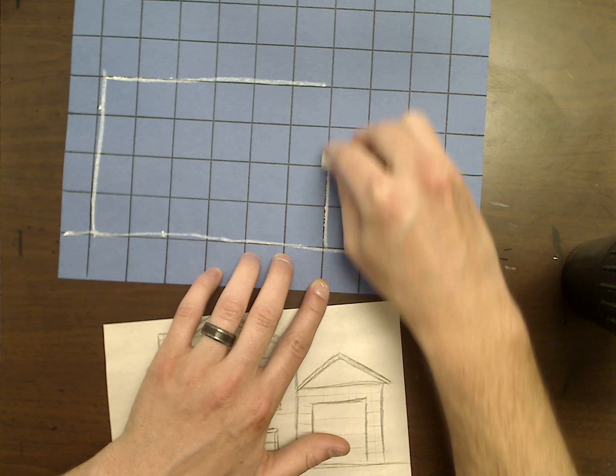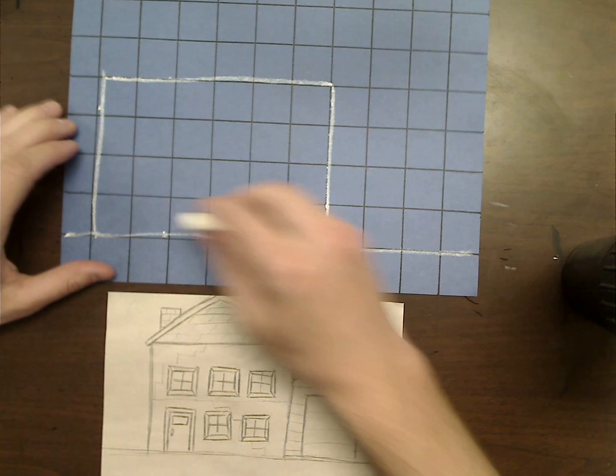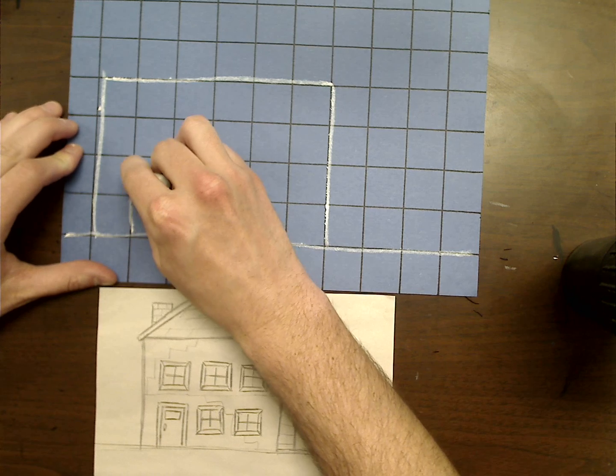Now I'm not always going to be able to follow those lines. Things like my door and my windows might be a little bit smaller. So something like this.